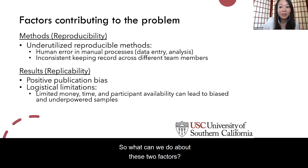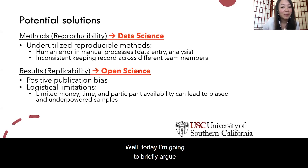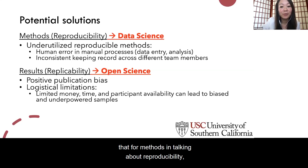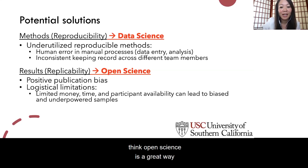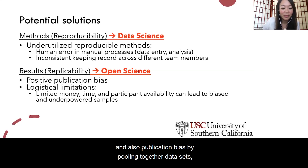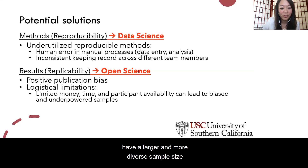So what can we do about these two factors? Today I'm going to briefly argue that for reproducibility in methods, we can take tools from data science and use them to create more reproducible methods. And for replicability, open science is a great way to get around barriers of sample size and publication bias by pooling together published and unpublished data sets, so that we have a larger and more diverse sample to use.